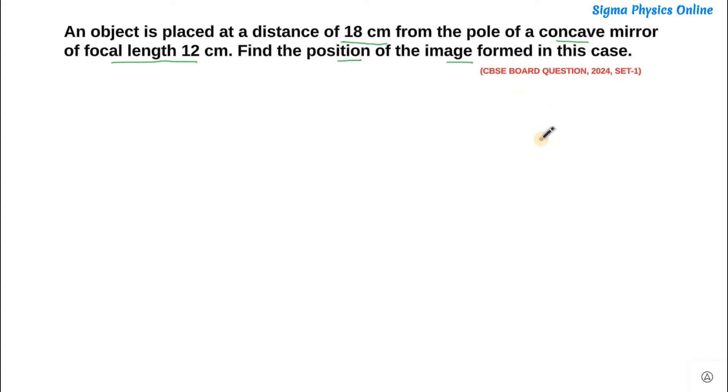So first let's draw the diagram. So here is the concave mirror and this is the focal length of this mirror. So the focal length is given as 12 cm. So if the focal length is 12 cm, then the radius of curvature will be 24 cm.